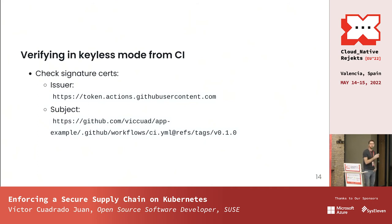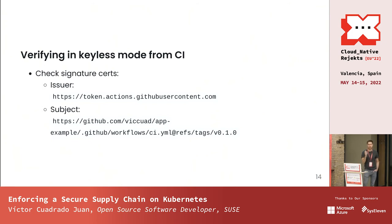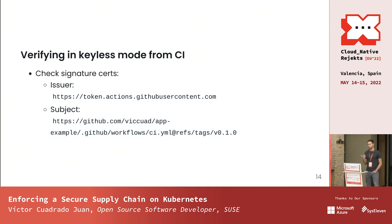If you match the whole subject, you only accept that specific signature. If you stop at app-example, you trust everything from that specific repo, even another workflow. If you stop at Bitquad, you trust everything from me. You need to follow best practices — if somebody creates a user called Bitquad2 and your regex isn't precise, you could match it also.